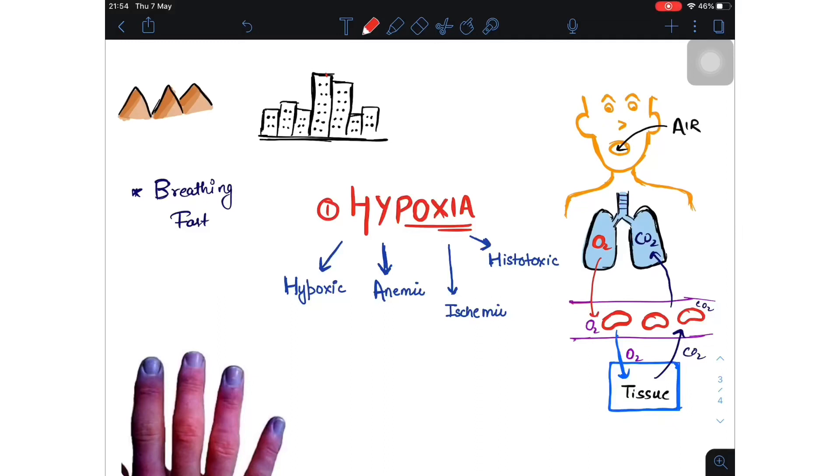Hey guys, this is Keshav. Everyone experiences breathing very fast when they go on a mountain or high place. It's because our body is going into a condition known as hypoxia. In this video, we'll talk about hypoxia and their types: hypoxic, anemic, ischemic, and histotoxic, and which type of hypoxia is related to this blue discoloration of skin that is cyanosis.